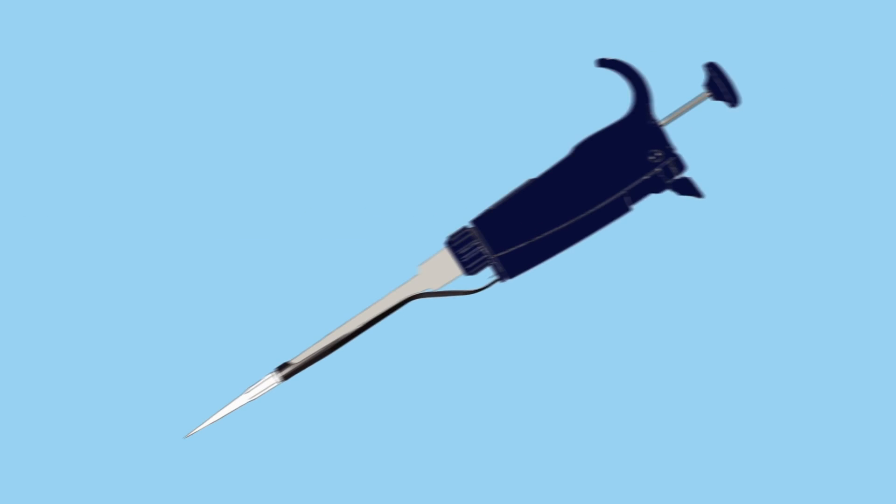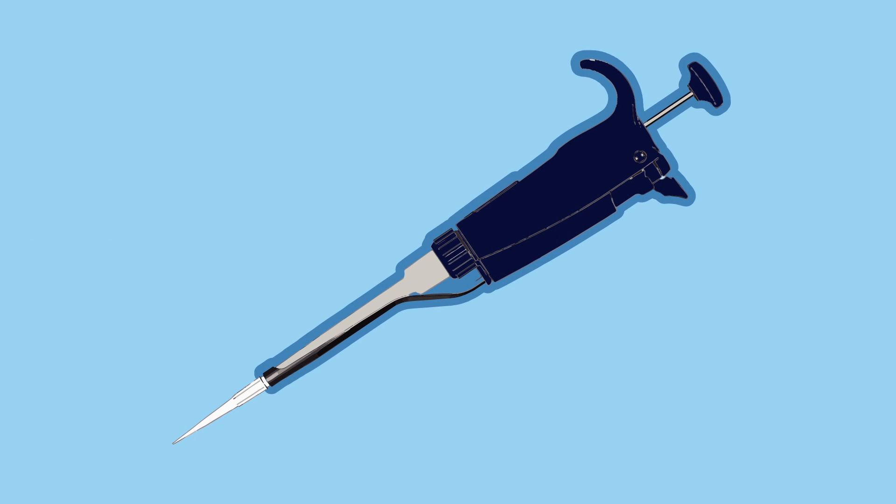Barrier, often called filter tips, serve two purposes. To protect your pipette from aerosols created when fluids are aspirated into the pipette tip, and to protect the pipette from contamination and or damage from over-pipetting.